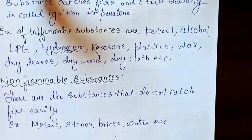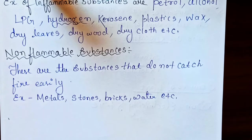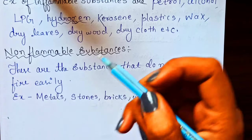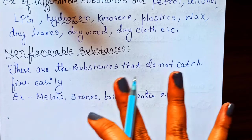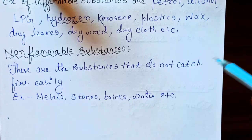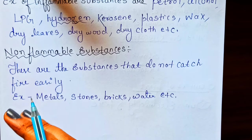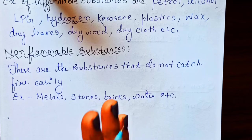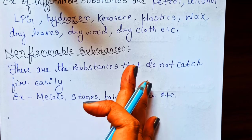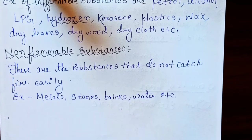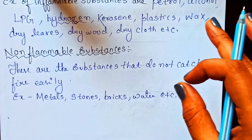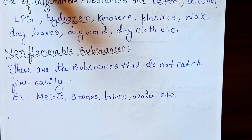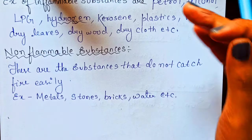The second type is non-flammable substances — these are the opposite. They do not catch fire easily. Examples include metal, stone, brick, and water. You should remember which substances do not catch fire easily.